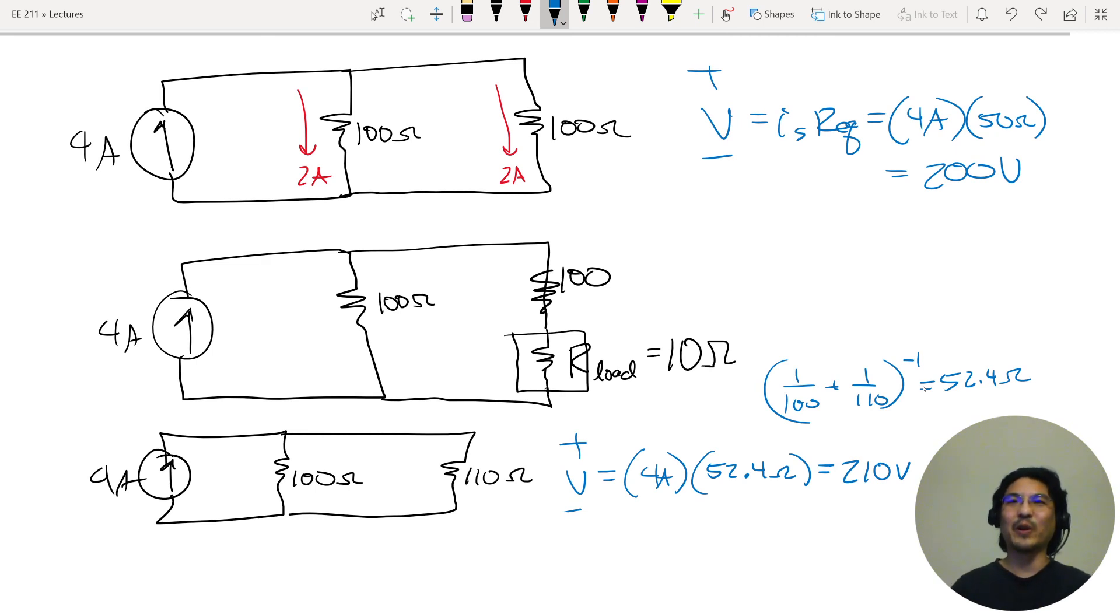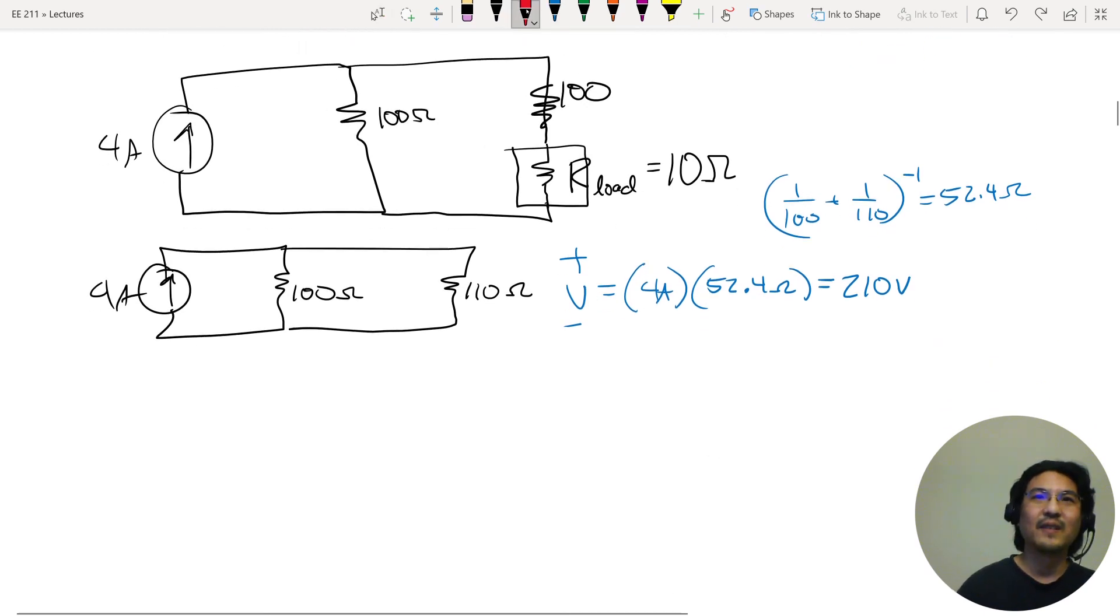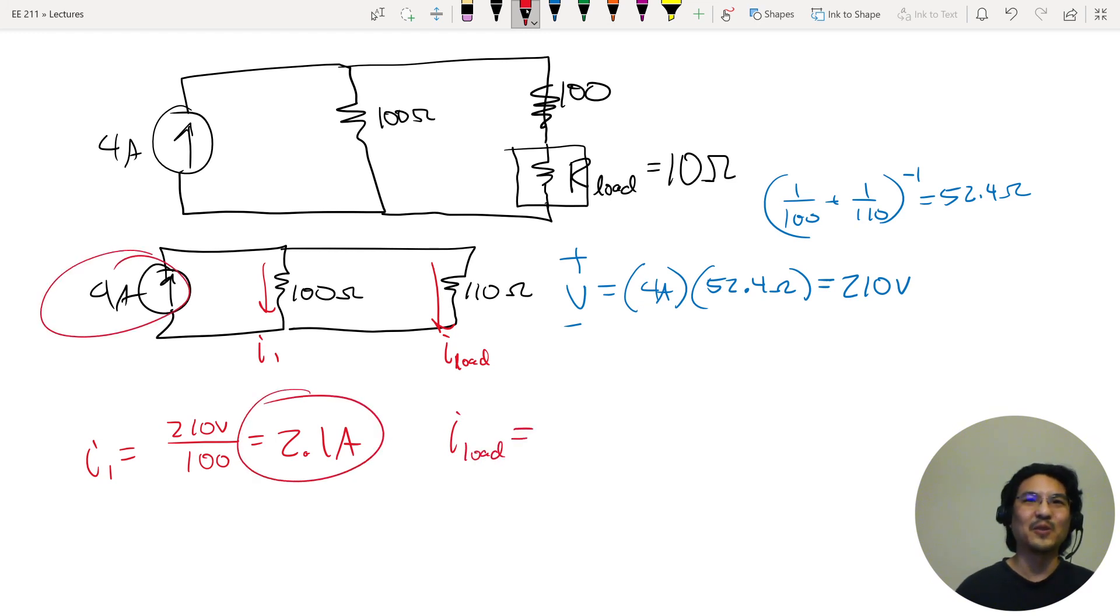I'm drawing, it's requiring a higher voltage. So then how much current now for each of these legs? So the current here, I'll call this I1, and I'll call this I load. So I1 is V over R1. So then that's 2.1 amps across the load. Well, I can just say 4 minus 2.1. But you can double check. If you do 210 over 110 ohms, it'll be 4 minus 2.1. So 1.9.